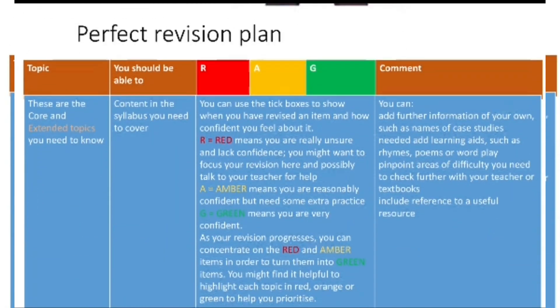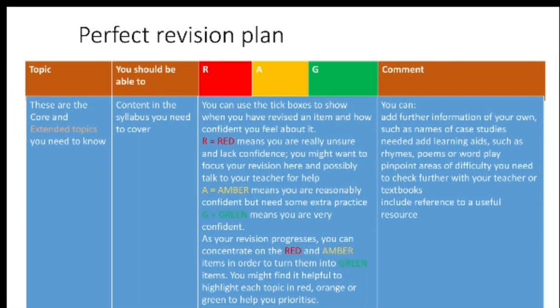Plan for your physics examination. A student of class 10 belongs to any syllabus can use this plan. And as you can see there are four columns: first contain topic, second you should be able to, third these are the main thing red amber and green colors, and the fourth column contain comment. So first topic means there will be core and extended, and extended topics will be in different color.